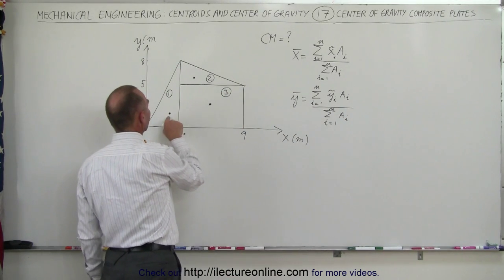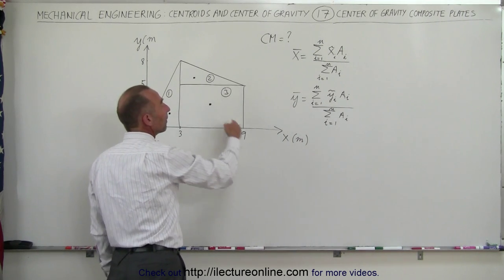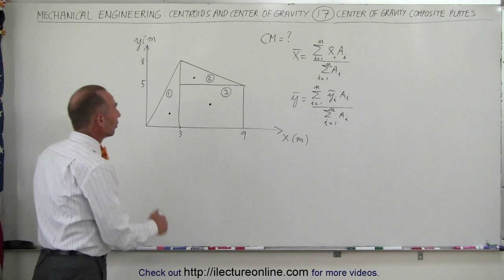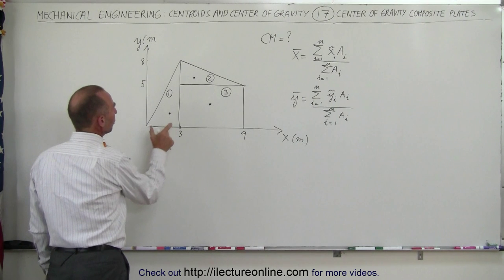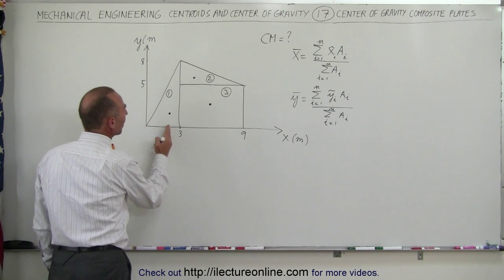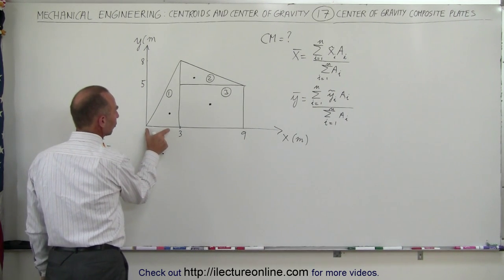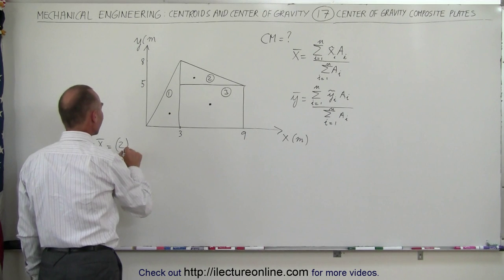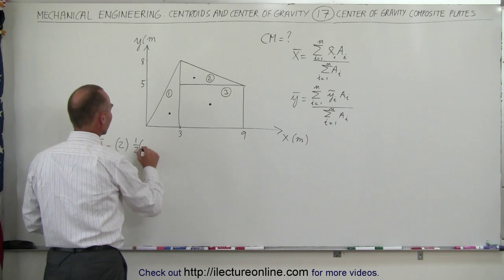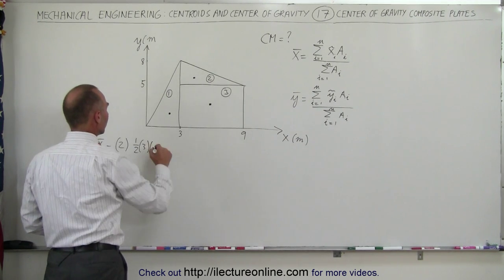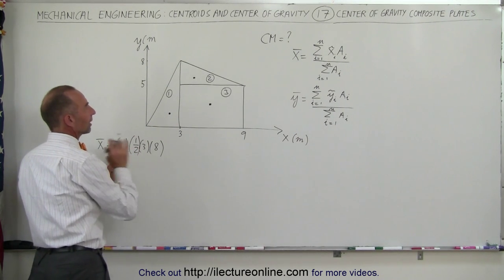We multiply the x-coordinate of the center of mass of each piece times the area of each piece, sum them all up, and divide by the sum of all the areas. For the x-coordinate of piece 1, notice it would be two-thirds of the distance in the x-direction. Since this is 3 meters, two-thirds of that distance would be 2 meters. That would be 2 times the area, which is one-half times base times height: one-half times 3 times 8.